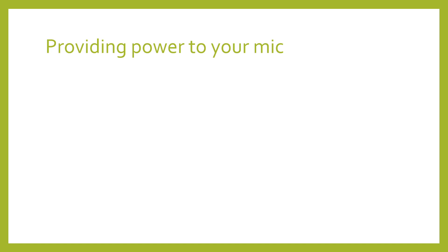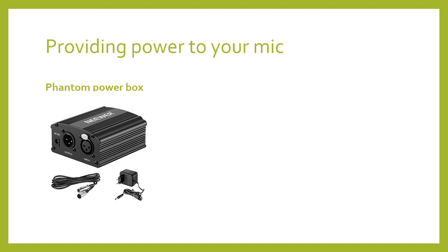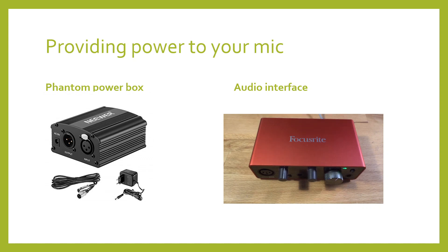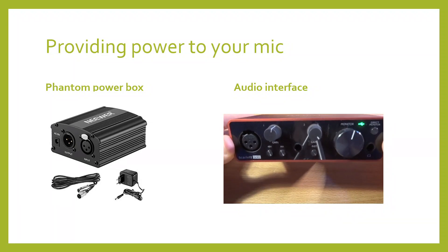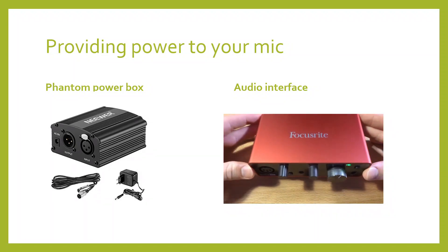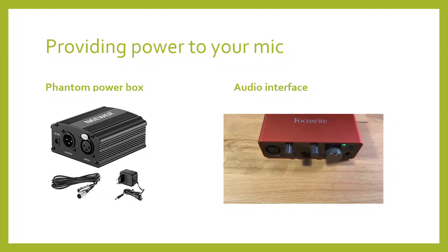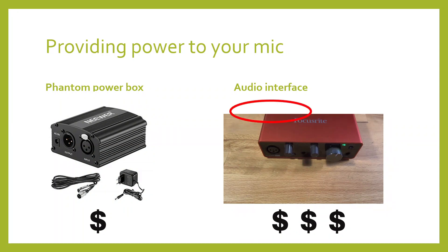There are two options to provide your condenser microphone with power. One is to get a phantom power box such as this one by Neewer. The other option is to get an audio interface such as the Scarlett Solo I have here. An interface is generally the way to go because it gives options for more inputs, headphones, speakers and other sound devices. It ensures good quality sound transmission from the mic to the computer. However the phantom power box is generally cheaper — all it does is provide one microphone with power before the signal reaches the computer. You should probably choose an audio interface because it gives you more value and options to expand and upgrade.